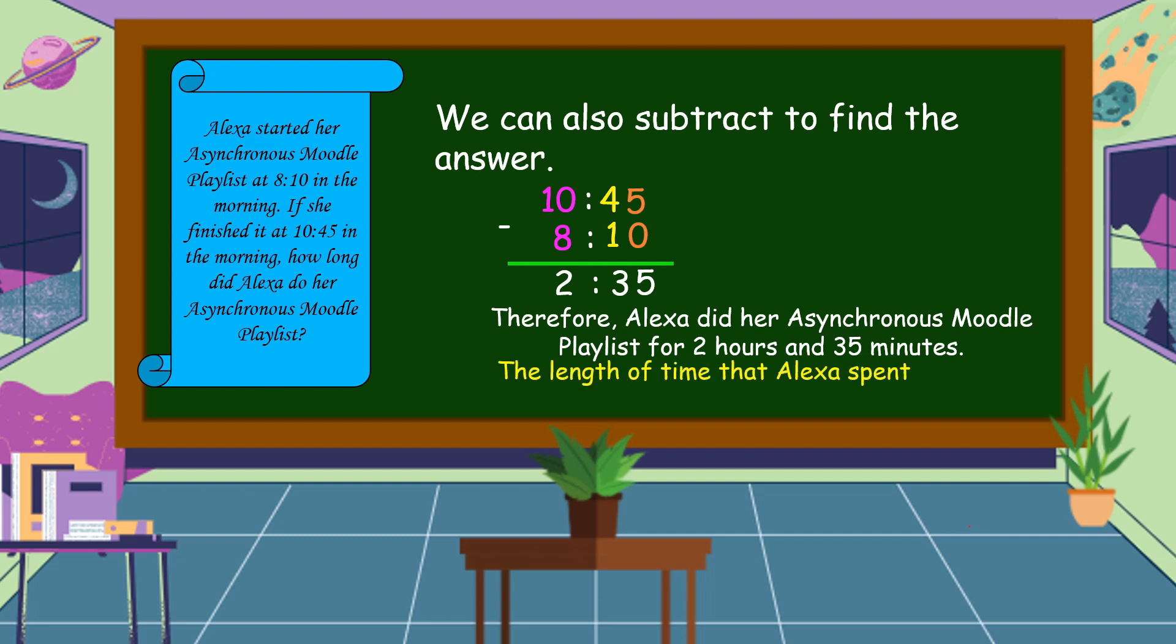The length of time that Alexa spent in her asynchronous Moodle playlist is called elapsed time.